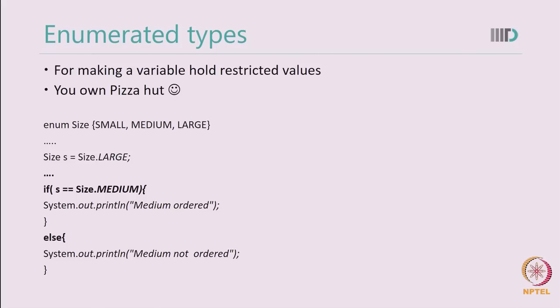Java also gives you enumerated types which means that you can declare your own restricted values. Suppose you own the pizza hut and that is why you would like to describe the size as a small, medium or large. An enum type allows you that possibility. So, you can declare your own data type such as a size which has three values of a small,